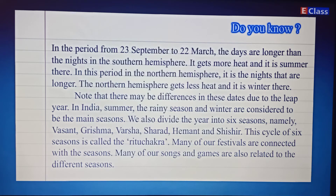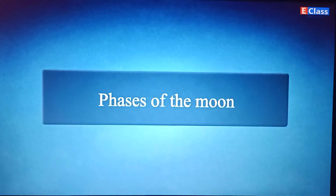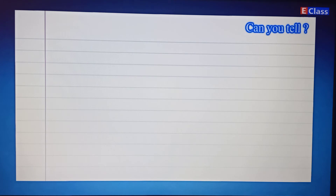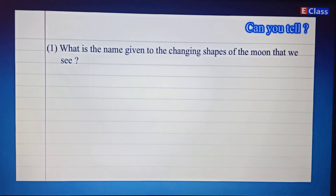We also divide the year into six seasons: Vasant, Grishma, Varsha, Sharad, Hemant, and Shishir. This cycle of six seasons is called the Rutu Chakra. Many of our festivals are connected with the seasons, and many of our songs and games are also related to the different seasons.